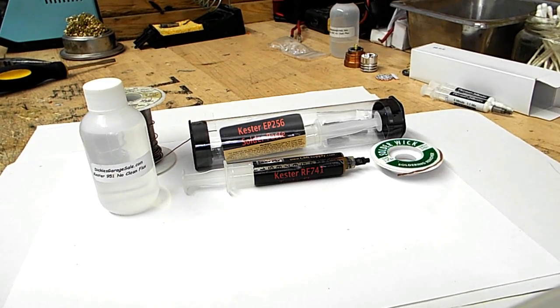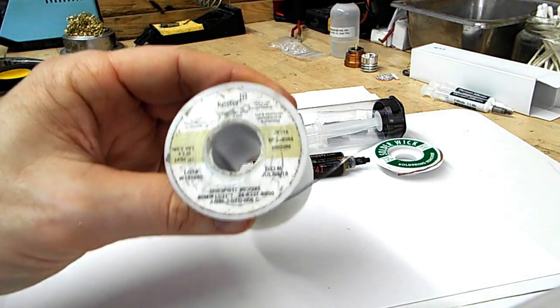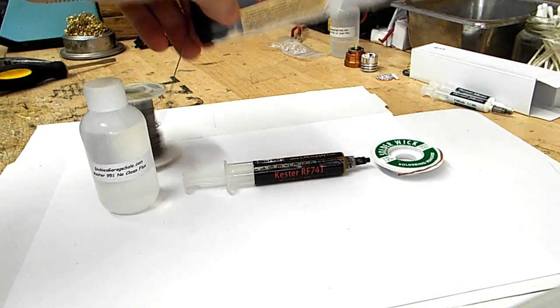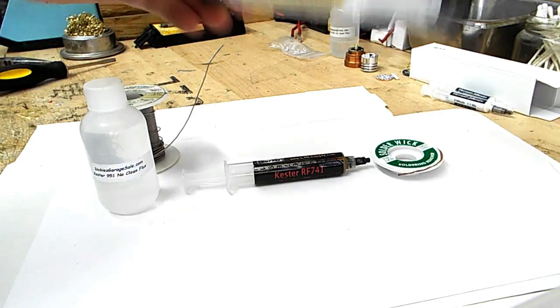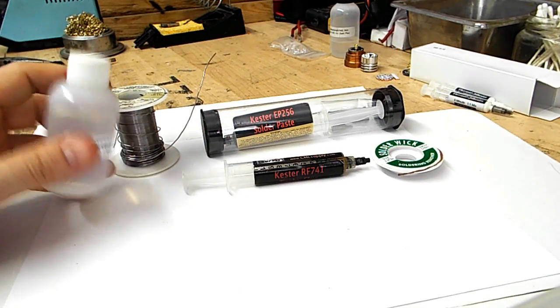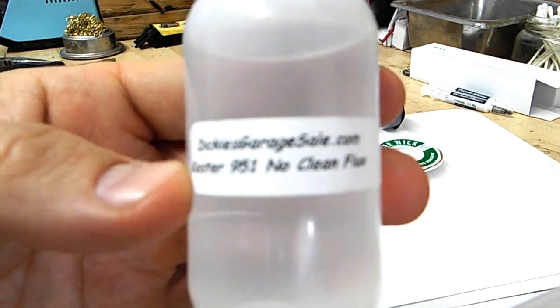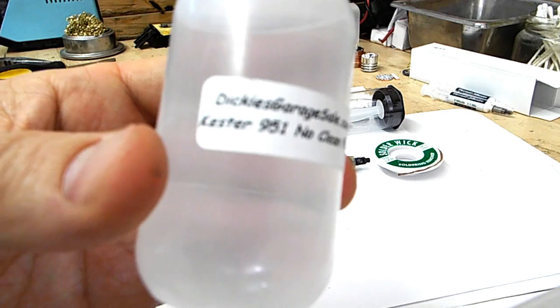Next, let's take a look at supplies. The solder I prefer is Kester 6337 no-clean flux core with a diameter of 0.031. I also use the EP-256 soldering paste for reflow soldering projects. My choice of flux, without a doubt, is Kester 951 no-clean liquid.